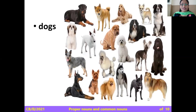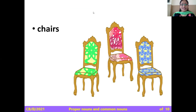Dogs — different breed, different color, different shape and size — together they are commonly known as dogs. See different varieties of chair: different color, different design, but these are commonly known as chairs. So these are all examples of common nouns.